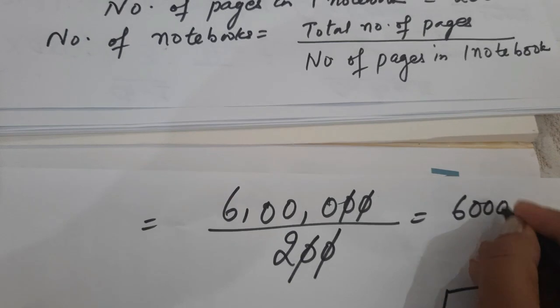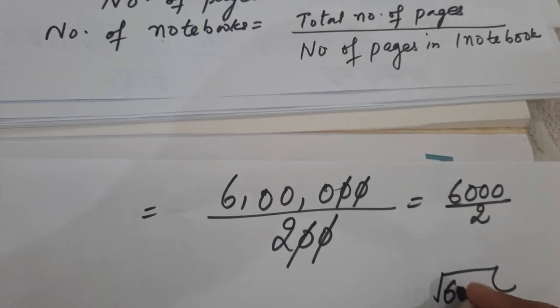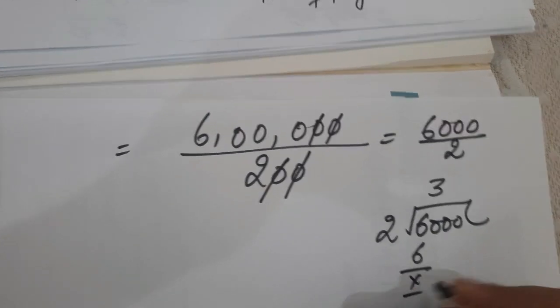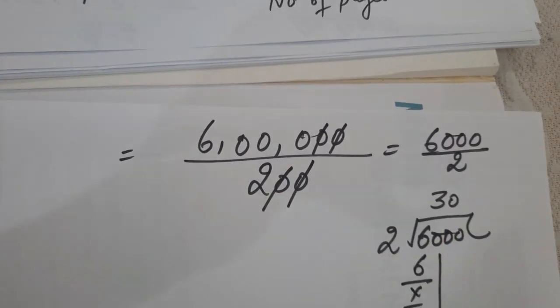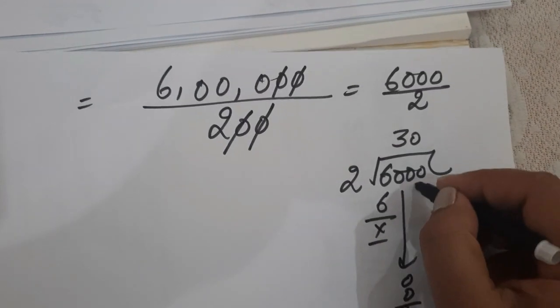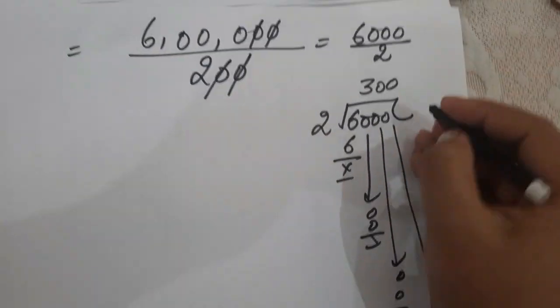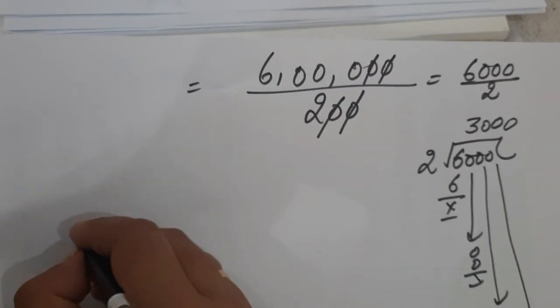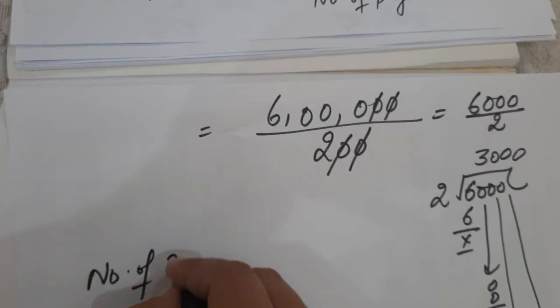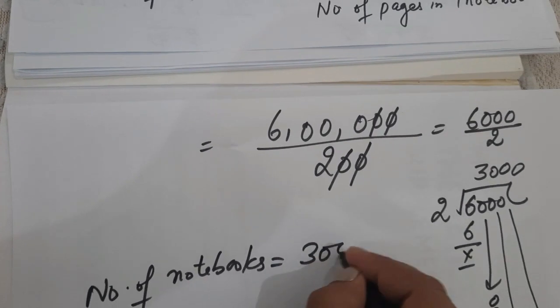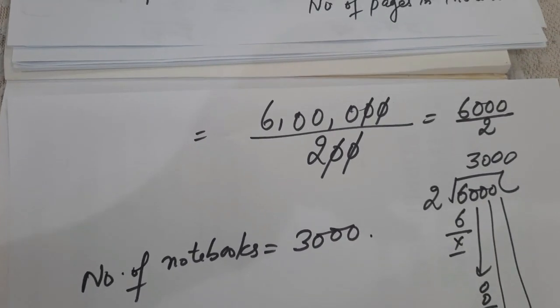That is 6 lakh upon 200. Cancel zeros: 600,000 divided by 200 gives us 6,000 divided by 2. Dividing 6,000 by 2 gives 3,000. So the number of notebooks is equal to 3,000. This is your required answer.